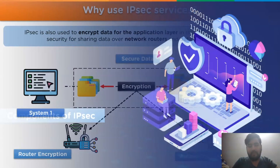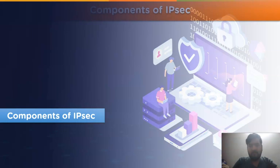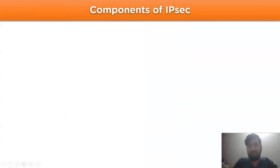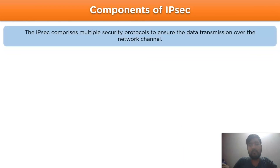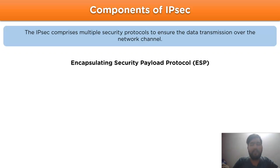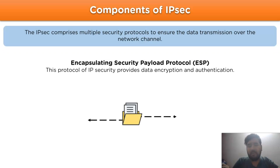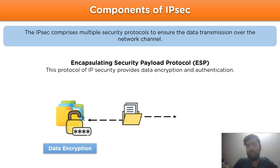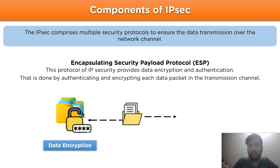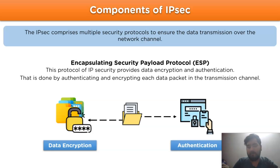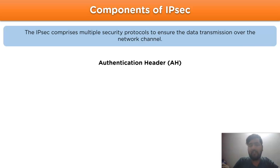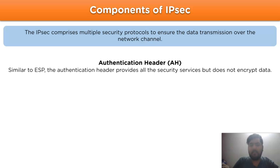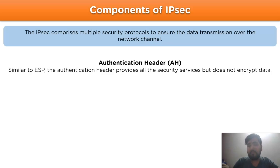Now let's look at the components of IPSec. The IPSec services comprise multiple protocols that ensure data transmission over the network channel. The first is the Encapsulating Security Payload protocol (ESP), which provides data encryption and authentication services, and it authenticates and encrypts the data packet in the transmission channel. Moving on, we have the Authentication Header (AH). Similar to ESP, the Authentication Header also provides security services, but it does not encrypt the data.